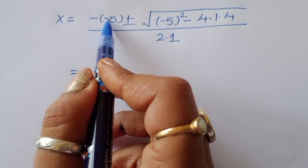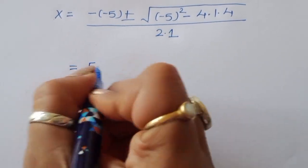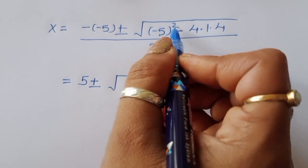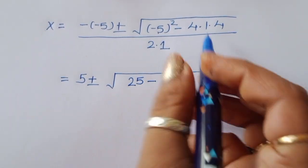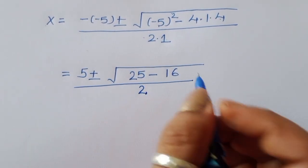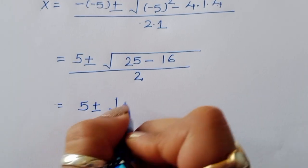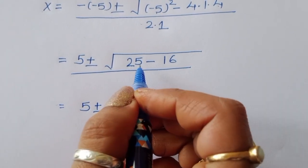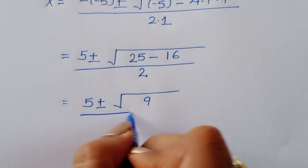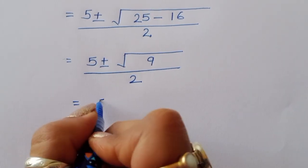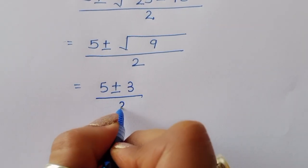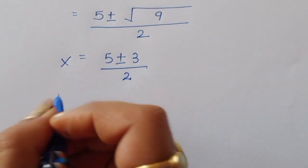Simplifying: x = (5 ± √(25 - 16)) / 2 = (5 ± √9) / 2. Since √9 = 3, we get x = (5 ± 3) / 2.